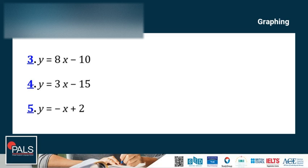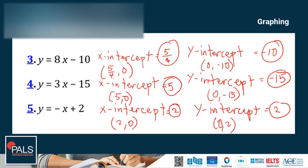For equations 3, 4, and 5, find the X and Y intercepts. Pause the video, then continue to check your answers. For number 3: X-intercept is 5/4, ordered pair (5/4, 0); Y-intercept is -10, ordered pair (0, -10).